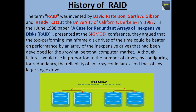The term RAID was invented by David Patterson, Garth A. Gibson, and Randy Kitts at the University of California, Berkeley, in 1987. In their June 1988 paper, 'A Case for Redundant Arrays of Inexpensive Discs,' presented at the SIGMOD conference, they argued that the top-performing mainframe disk drives of the time could be beaten on performance by an array of inexpensive drives developed for the growing personal computer market. Although failures would rise in proportion to the number of drives, by configuring for redundancy, the reliability of an array could far exceed that of any large single drive.